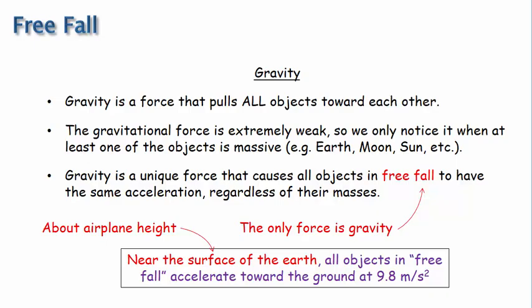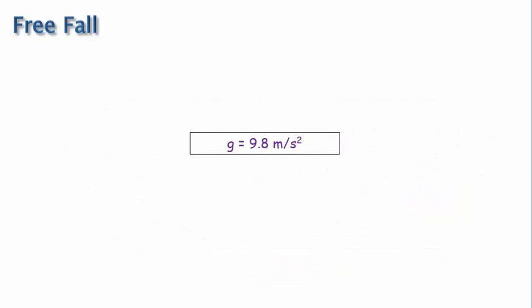So back to an object in free-fall near the surface of the earth. This acceleration value of 9.8 meters per second squared turns out to be quite useful and shows up several times in physics. For that reason, it's assigned the symbol G. All right, so now let's apply this fact to a kinematics problem.